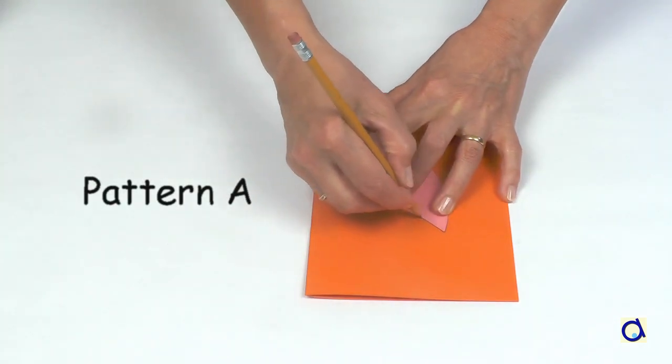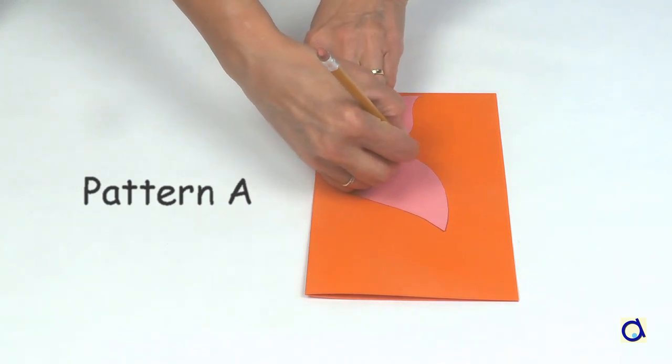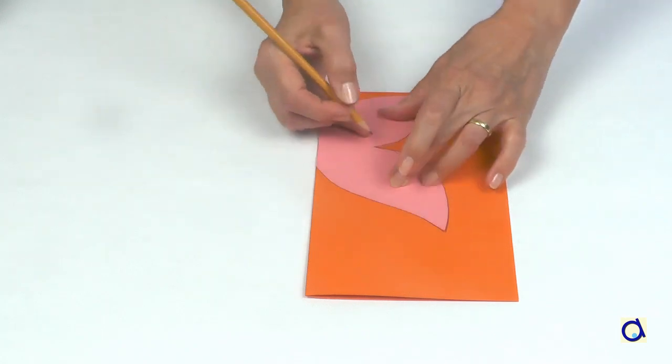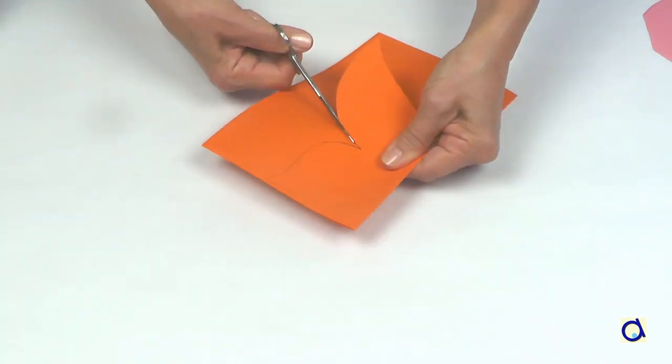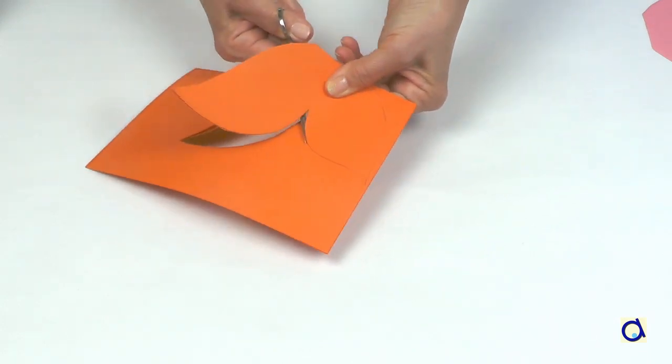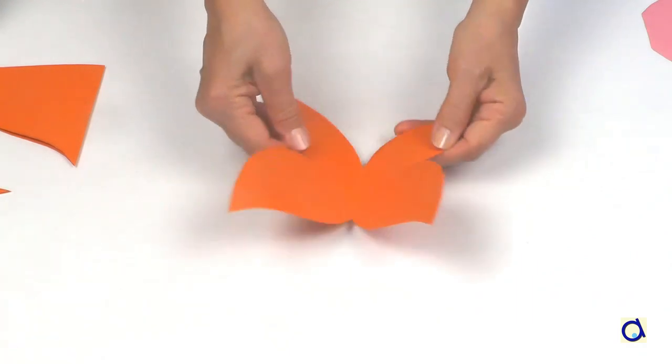Take pattern A and place the straight side that corresponds to the axis of symmetry of the butterfly along the fold of the construction paper. Trace the outline of the pattern with a pencil and then cut out both layers of construction paper. When you open the construction paper, you get two attached wings.